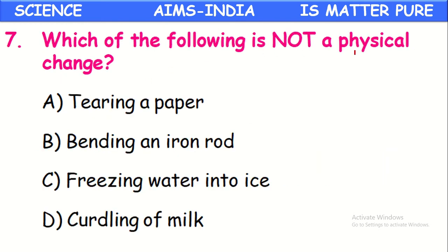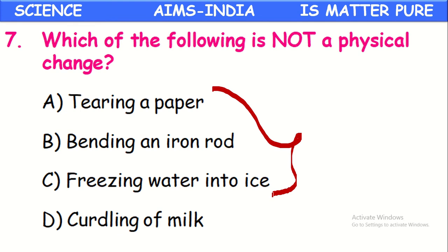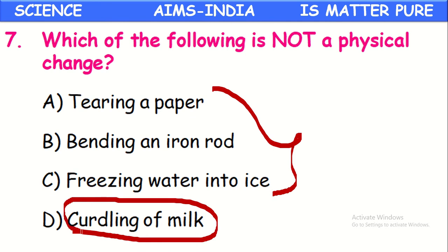Which of the following is not a physical change? Options: tearing of paper, bending of iron rod, freezing of water into ice, curdling of milk. A physical change is one in which there is no change in the chemical composition. For the first three, there is no change in chemical composition — only a state change. But in curdling of milk, the chemical composition changes: milk converts into curd. It is irreversible — we cannot get back milk from curd. Such a change is called a chemical change, so curdling of milk is not a physical change.